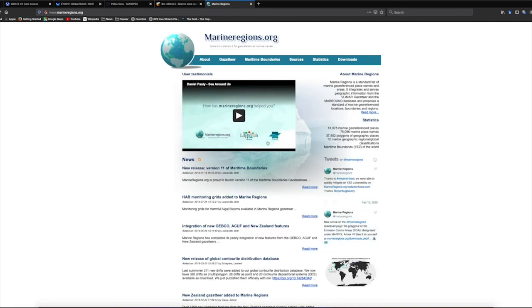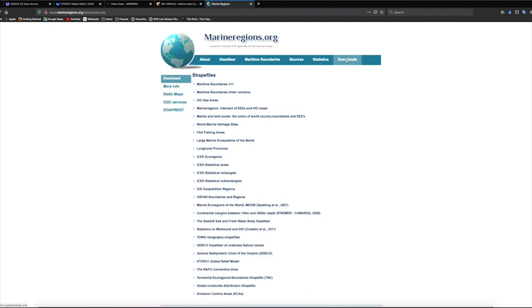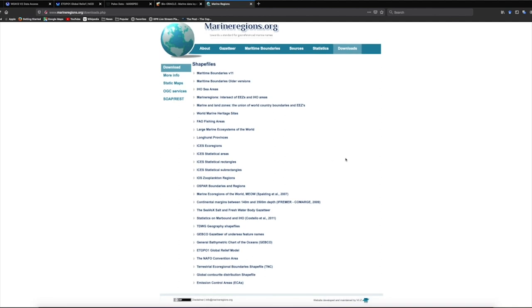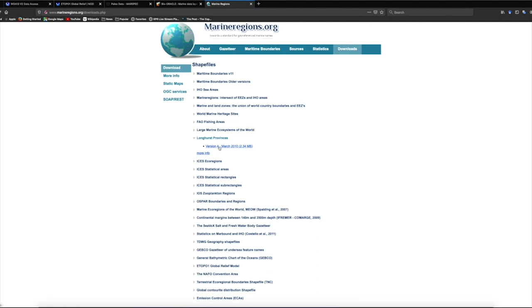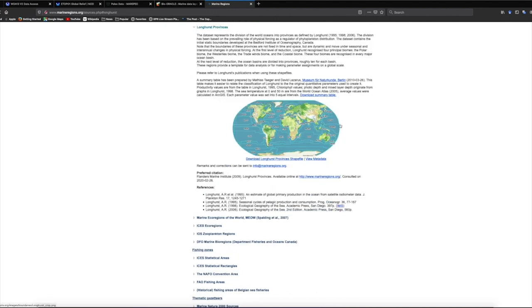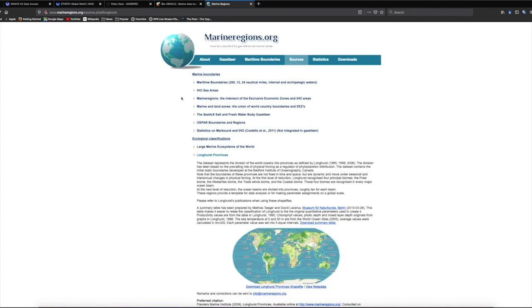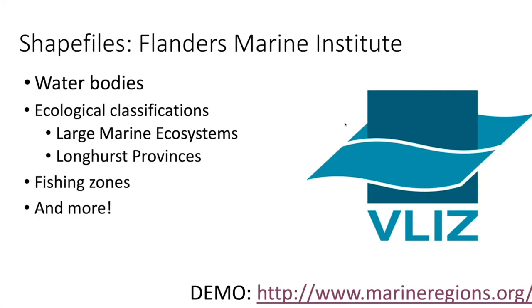And so here is that website. And then you can go to downloads. And these are all of the available downloads. So say I wanted Longhurst provinces, which are biogeographic provinces. So you can look at more info to see what those provinces look like. And it will explain much more about the data set there. So you have really nice metadata associated with all of the Flanders Marine Institute data.